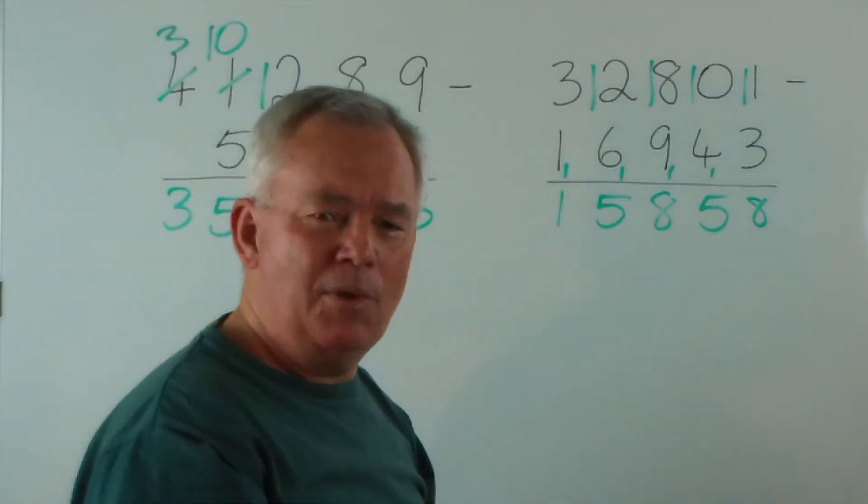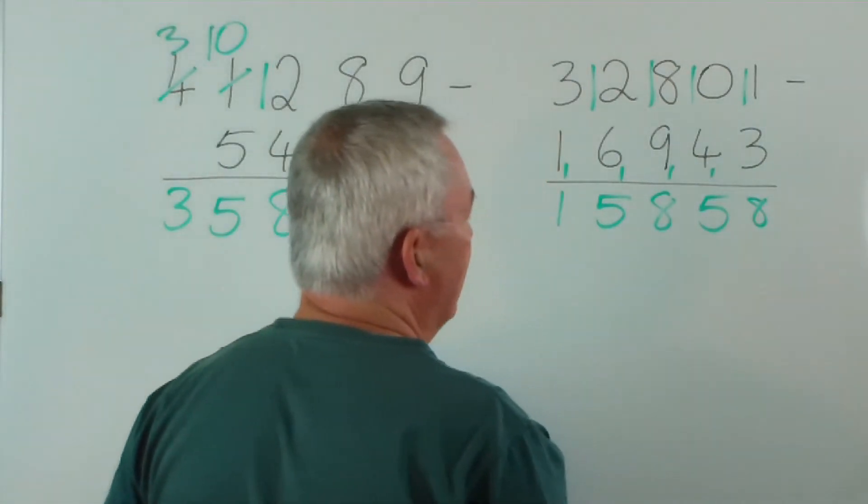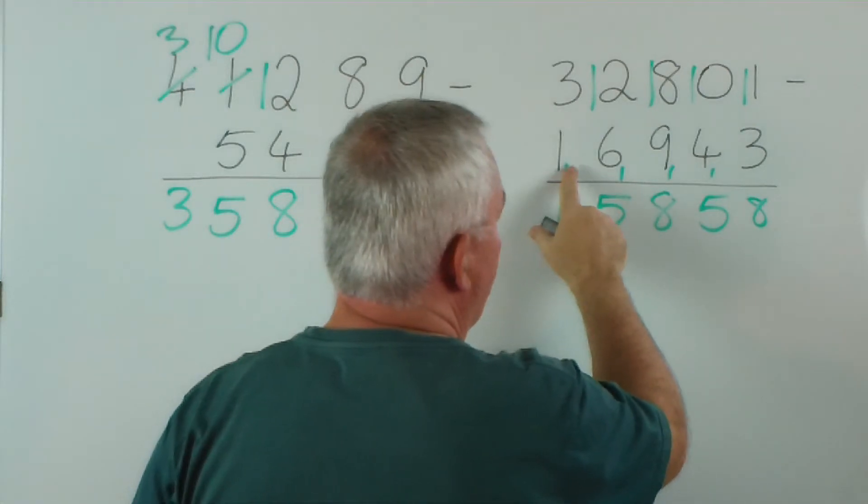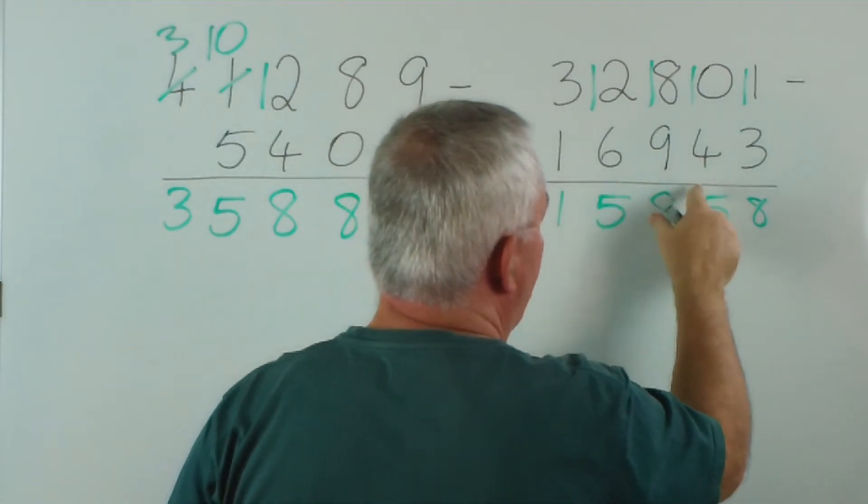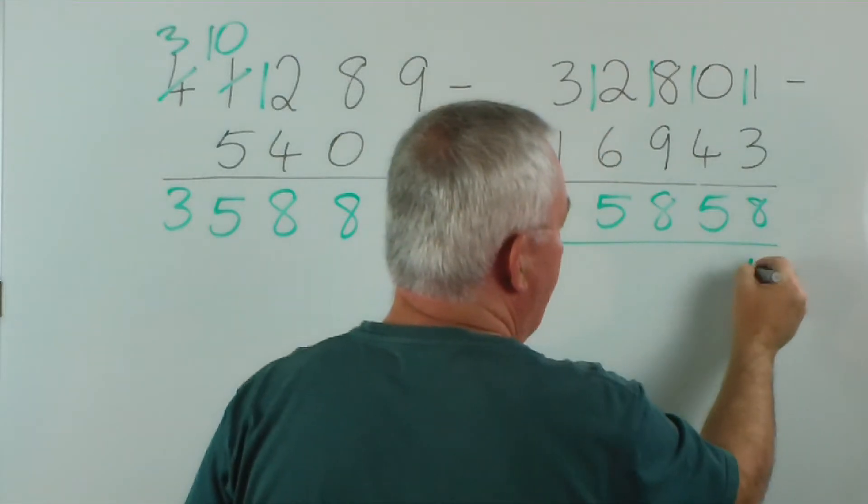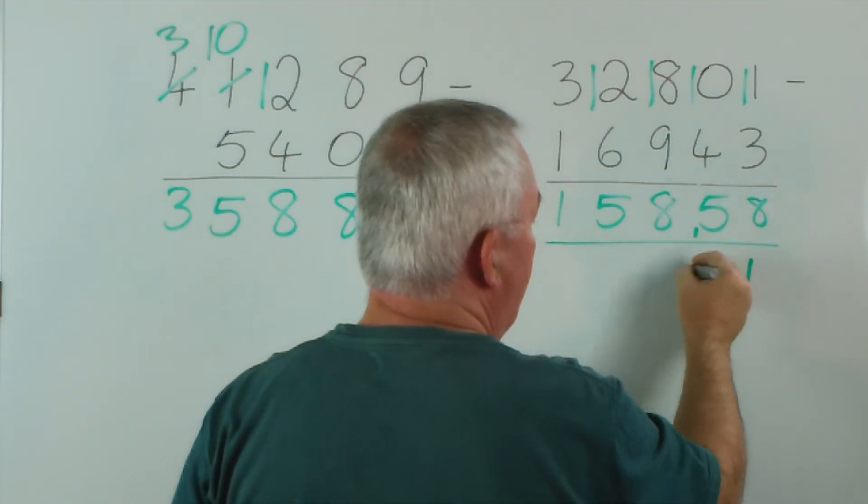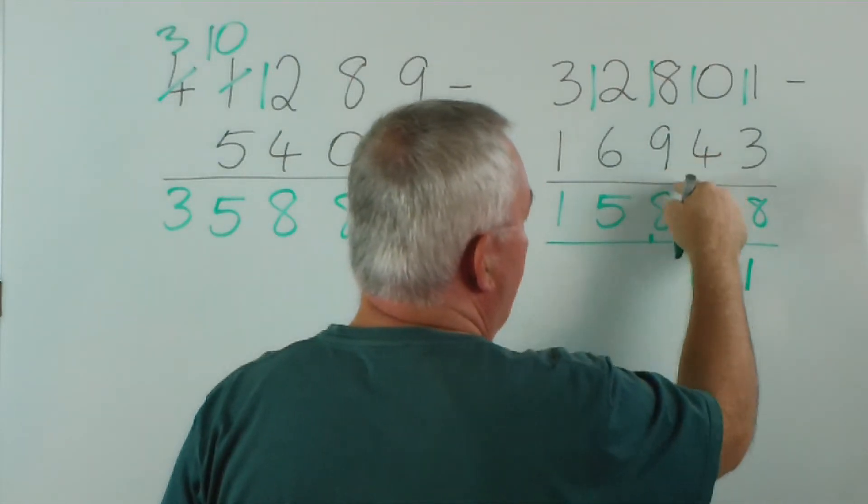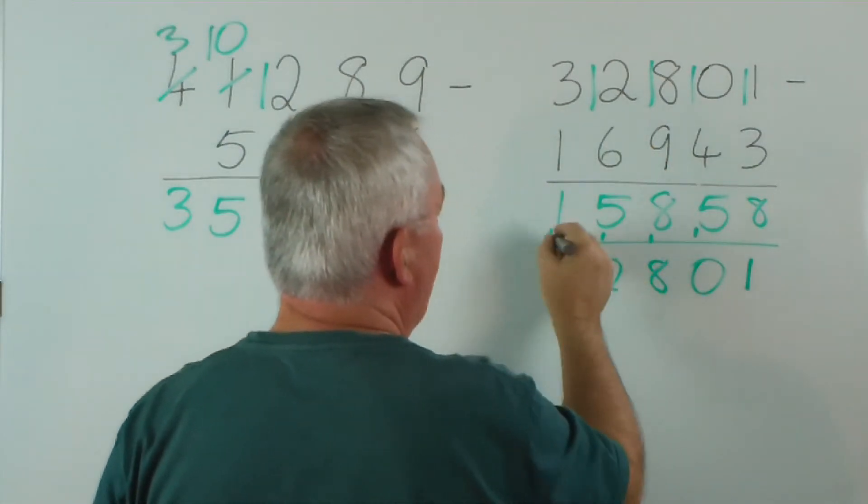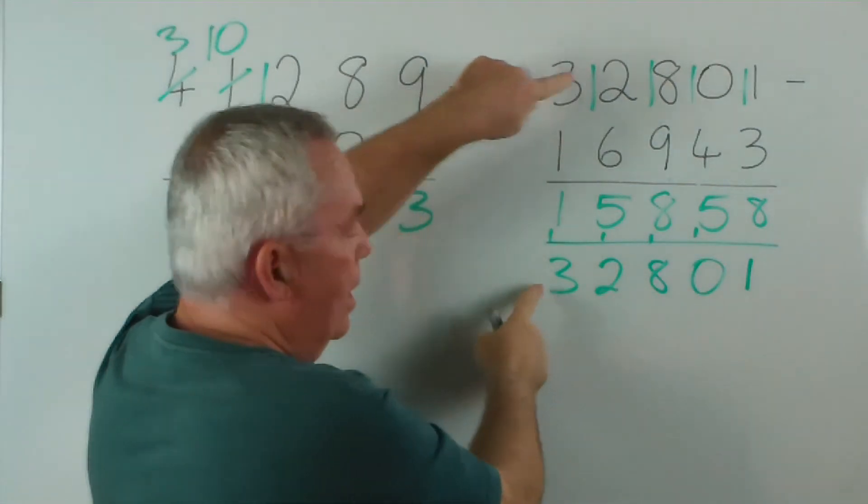That might have sounded a bit confusing going through it like that... but you simply add. You can actually draw another line if you wish and do it... if I rub these out... you could just do this addition normally. 3 and 8 is 1... carry the 1. We've got 9 and 10... carry the 1. 9 plus 9 is 18... carry the 1. 6 and 6 is 2... carry the 1. 1 and 2 is 3. And there's our number... as we have before.